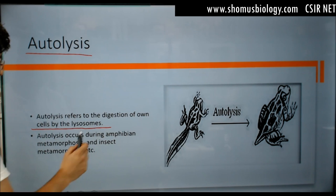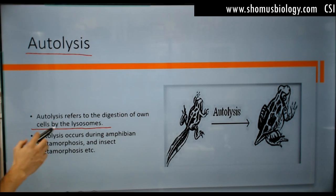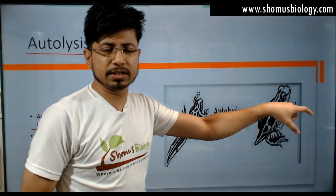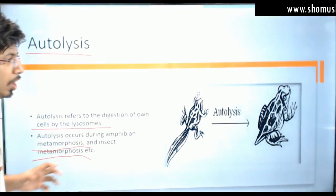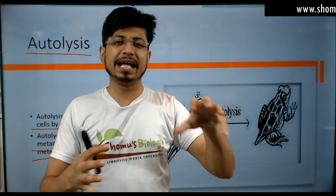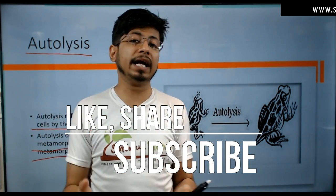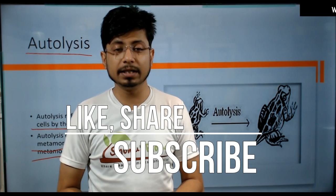The acrosomal reaction is carried out by the large single lysosome in the acrosomal process. Autolysis refers to the digestion of a cell's own components by lysosomes; it occurs during amphibian and insect metamorphosis, where different body structures are destroyed and degraded. Both apoptotic and autolytic methods are involved in metamorphosis. That concludes our understanding of lysosome structure and function. If you like this video, please hit the like button, share it, and subscribe to the channel for more videos.